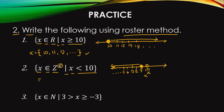So in writing the roster method, we write x equals braces: 9, 8, 7, 6, 5, 4, 3, 2, 1. Is there a continuation? No. Because there is a limitation — it says positive integers only. So negative numbers are not included.